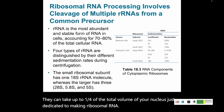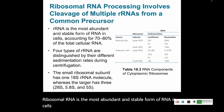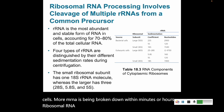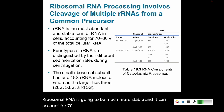Ribosomal RNA is the most abundant and stable form of RNA in cells. While mRNA is being broken down within minutes or hours, ribosomal RNA is going to be much more stable and it can account for 70% to 80% of the total RNA in a cell.